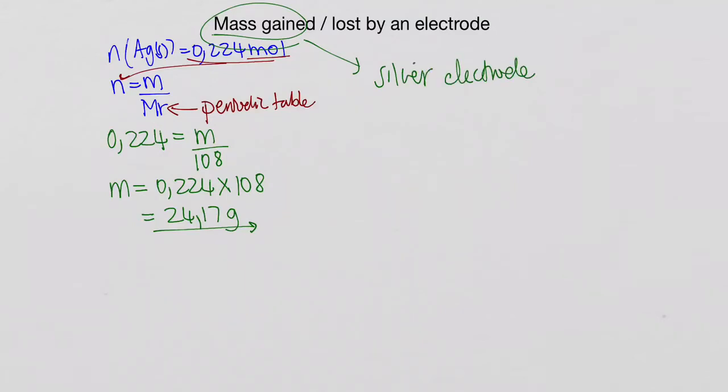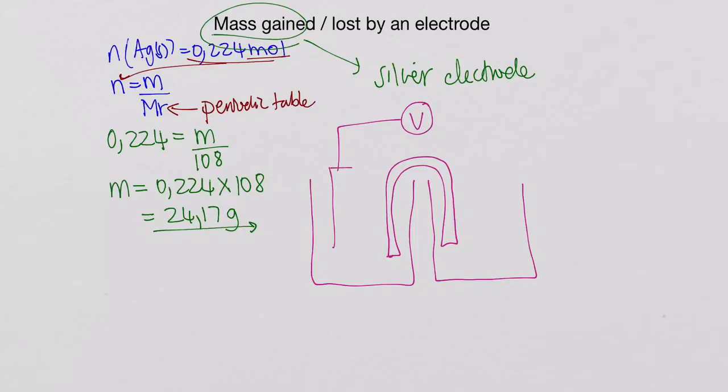So if we quickly go back to the beginning, when we started with this example, I drew for you guys a galvanic cell, and we had a salt bridge. We had our voltmeter on this side, we had an anode.